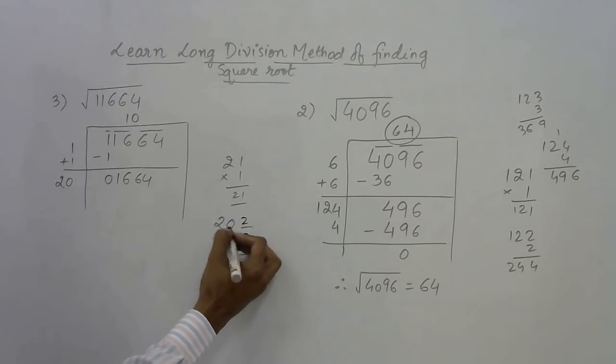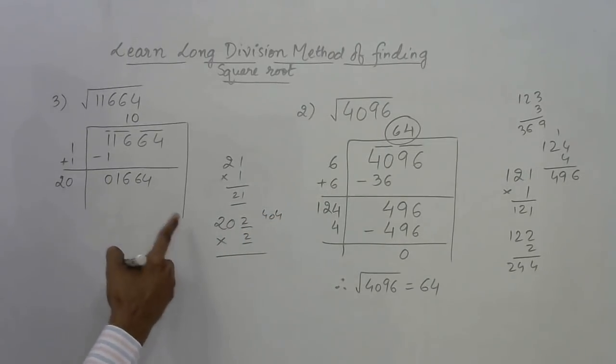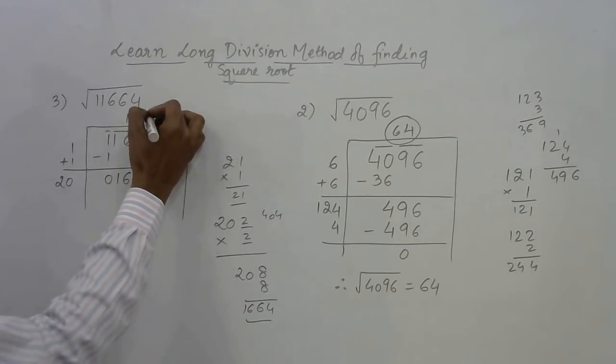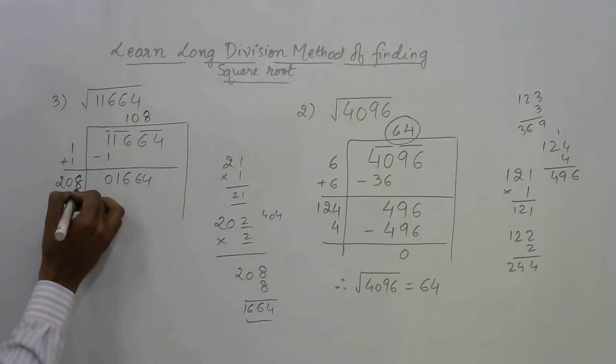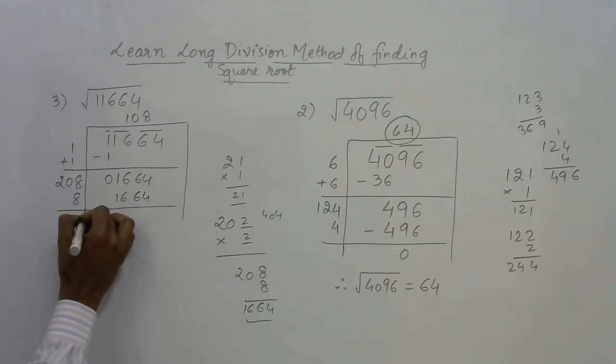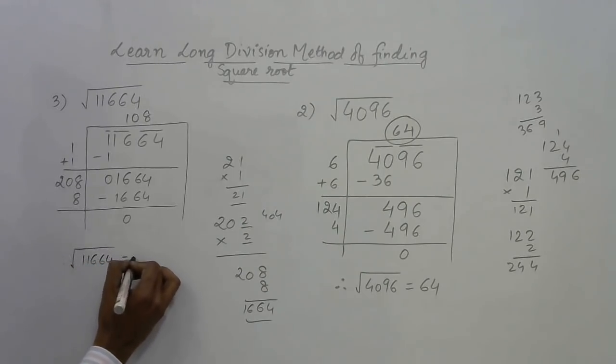If I put 2 here, 202 into 2 is 404 which is very much less than 1664. So I need to move ahead: 208 into 8, because 8 into 8 is 64. Same number is coming. So have 8 here, and 208 into 8 gives 1664, which cancels out on subtraction to give the answer: square root of 11664 is 108.